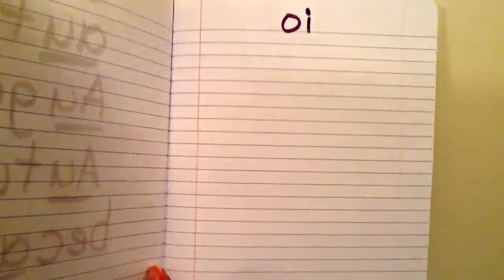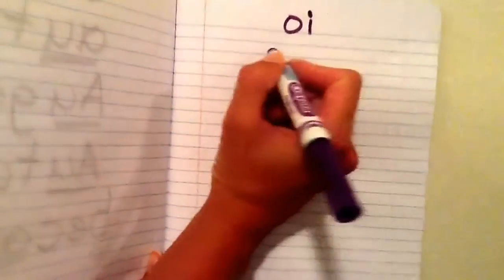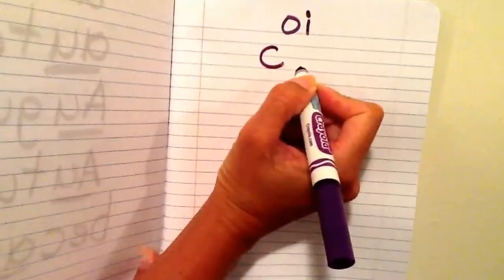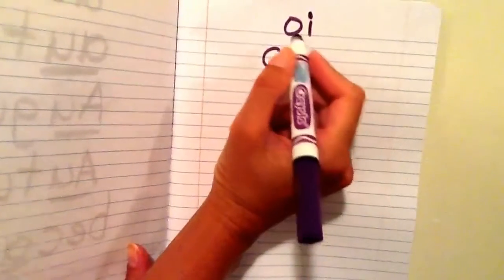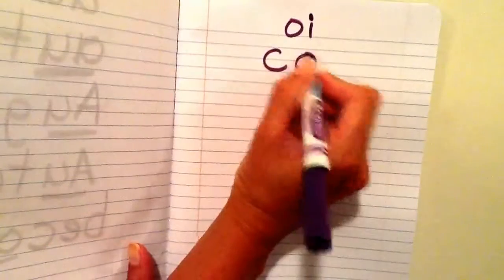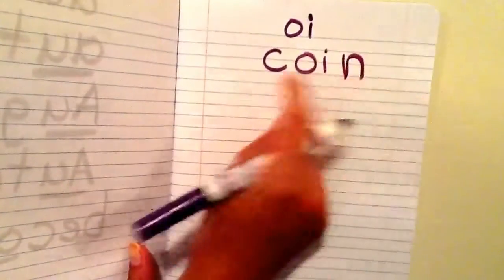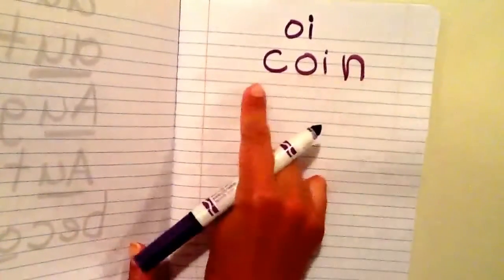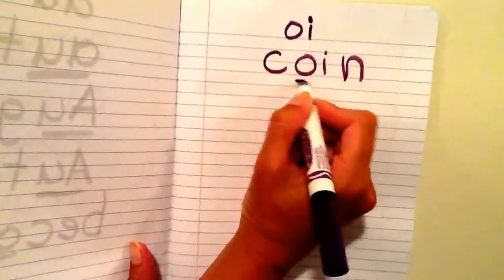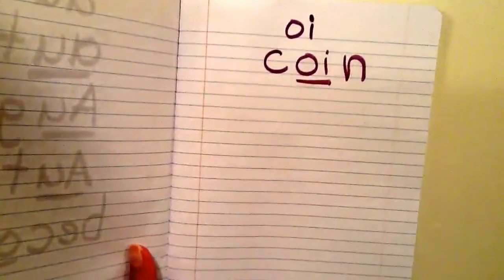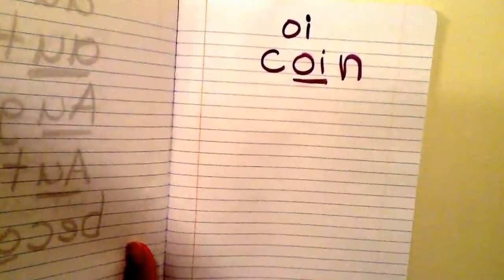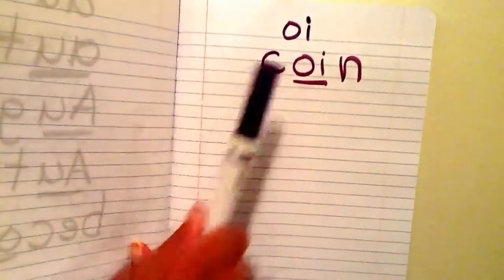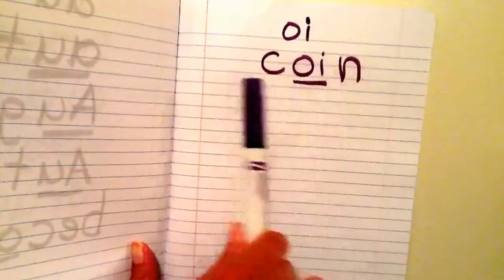The first word that we're going to write is coin. I hear coin and when I hear oy I'm going to write it as OI. Coin. C O I N coin. And then I'm going to underline OI saying oy. Please write that in your word study notebook. C O I N coin.